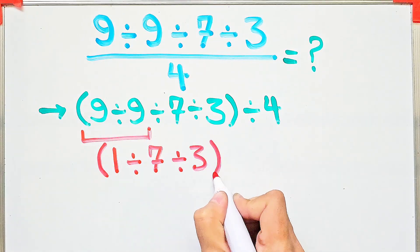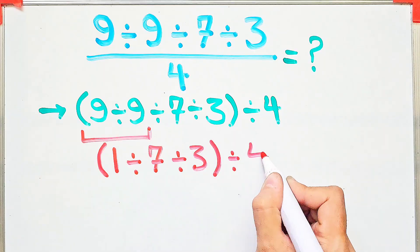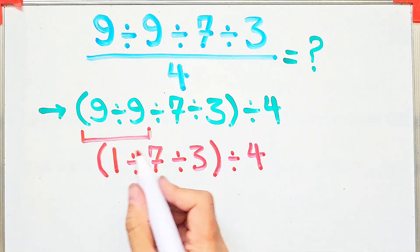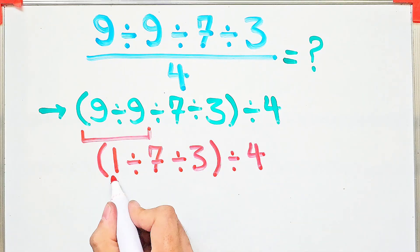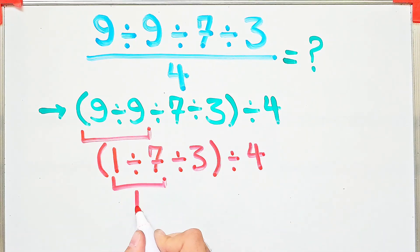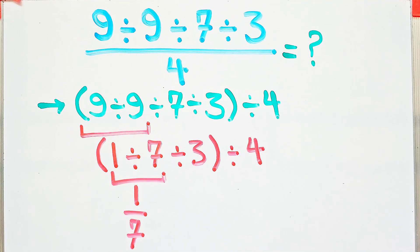Again, we simplify the parentheses. Inside the parentheses, we have 1 divided by 7, which equals 1 over 7. Now we have 1 over 7, divided by 3, then divided by 4.